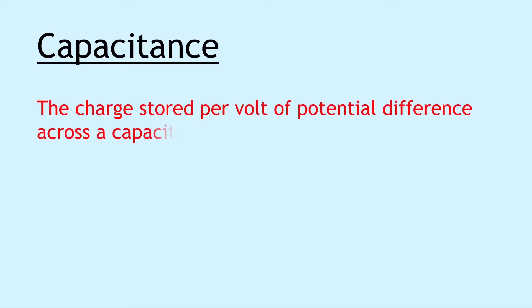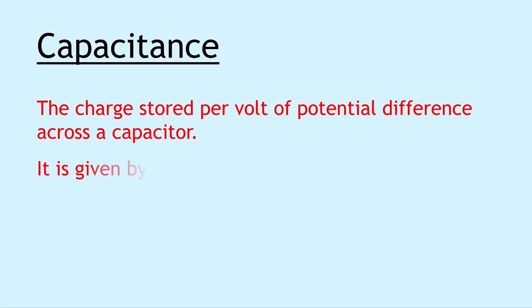Moving on, for capacitors we have something called capacitance, and this is the charge stored per volt of potential difference across a capacitor. Remember this can be seen from the equation for capacitance, which says that C equals Q over V. So we've got the Q part being the charge stored and the V part being the volt, so it's charge per volt, or Q over V. Capacitance is also given by the gradient of the line on a QV graph, i.e. a graph of charge versus potential difference.